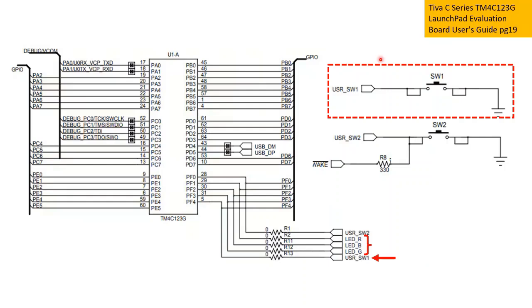Let's remind ourselves where the RGB LED and the user switch are located. Here is the schematics of the Tiva C LaunchPad board, taken from the Tiva C Series TM4C123G LaunchPad Evaluation Board User Guide, page 19.